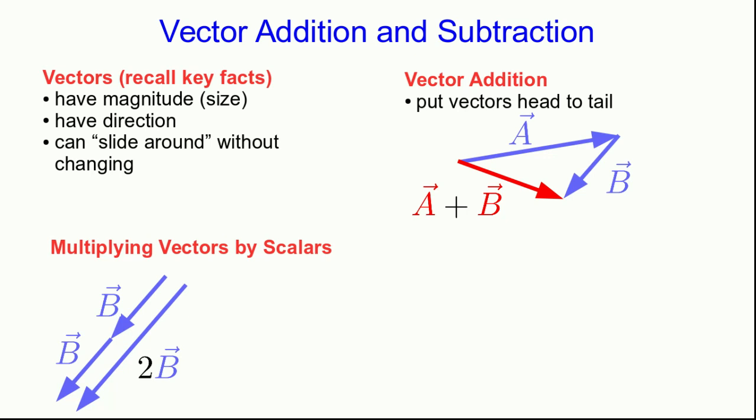If you multiply it by a negative number, it flips it end to end. Knowing how to multiply a vector by negative 1 is what we need to understand vector subtraction. Note that A minus B would be the same thing as A plus negative B. And so this tells us how to do a vector subtraction.